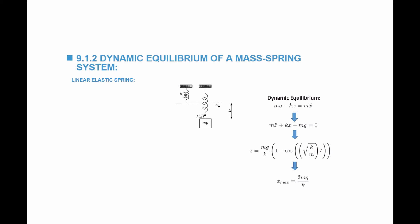Notice the difference from the static case: the maximum x is obtained when the cosine equals negative one, so 1 minus (−1) equals 2, meaning the maximum x equals 2mg/k. This implies that the maximum force in the spring equals k × (2mg/k) = 2mg. So even though we only apply a force mg, under dynamic conditions as the spring moves up and down, the force in the spring actually reaches double the applied force.